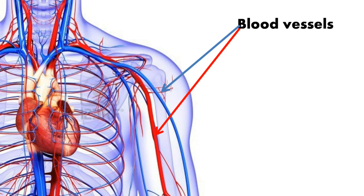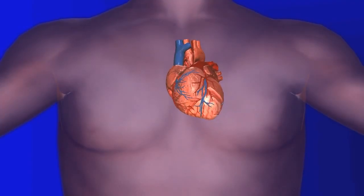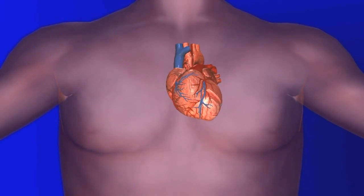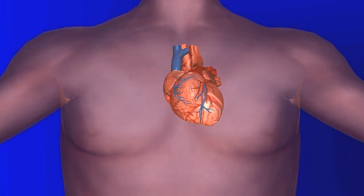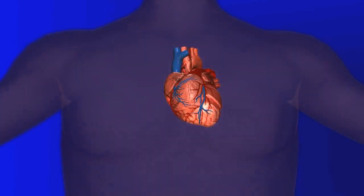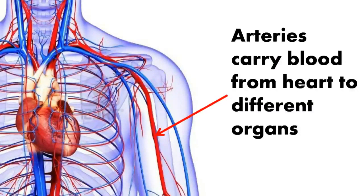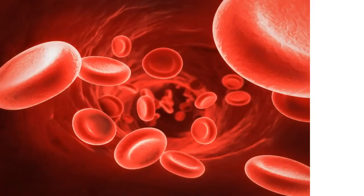The heart is like a pump that creates pressure to make blood flow through these pipes. Some blood vessels carry blood away from the heart — the heart sends blood to different organs through these vessels. These are called arteries.